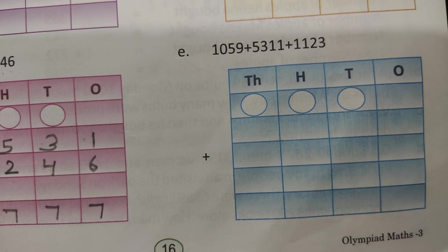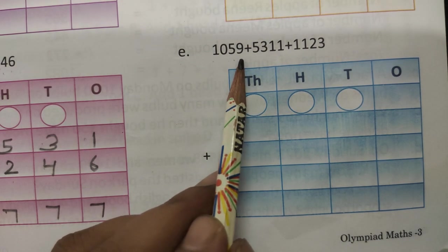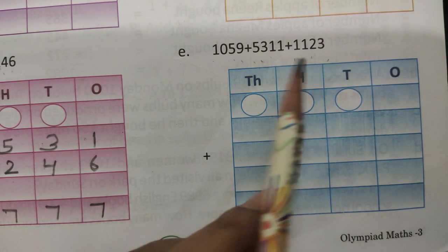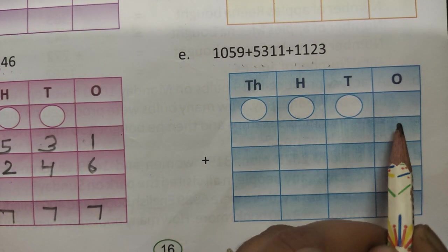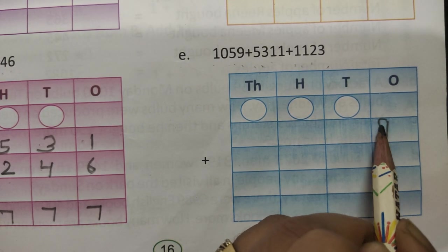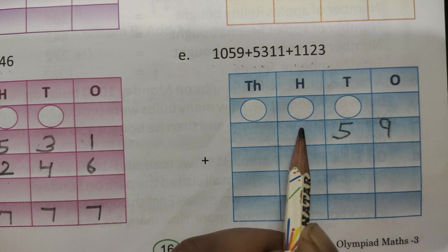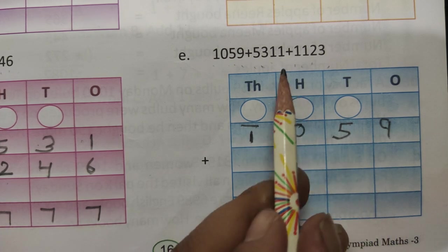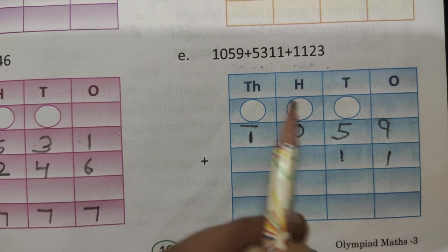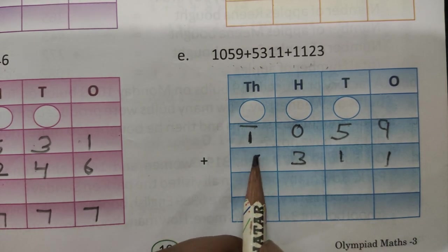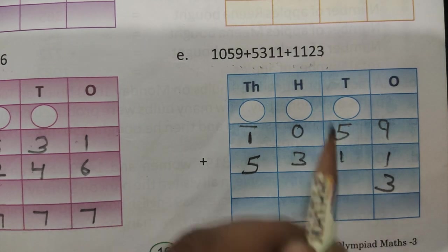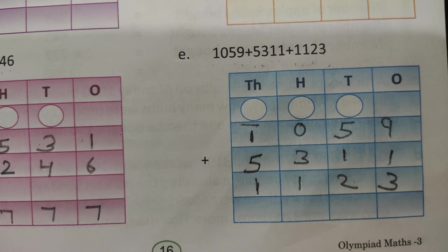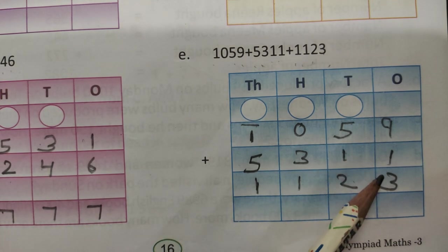Let's start E. 1059, 5311, 1123. Set the position is left side start: 9 is 1's place, 5 is 10's place, 0 is 100's place, 1 is 1000's place. The next 1, 1, 3 and 5. Next one is 3, 2, 1 and 1.